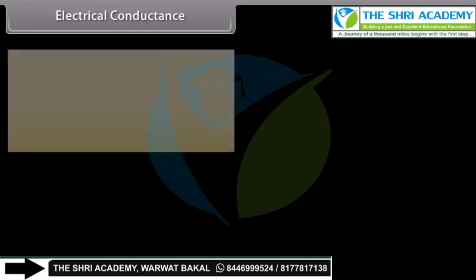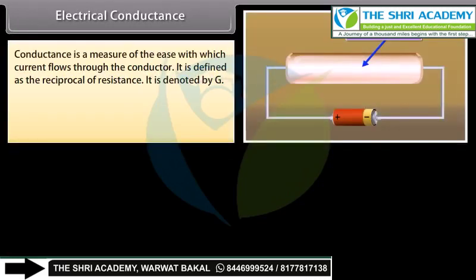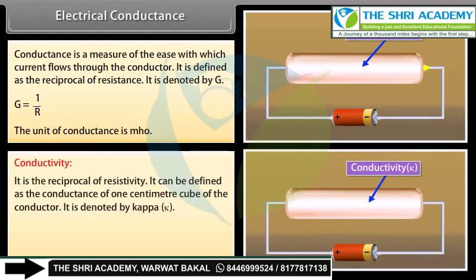Electrical Conductance: Conductance is a measure of the ease with which current flows through a conductor, defined as the reciprocal of resistance: G = 1/R. Conductivity is the reciprocal of resistivity, defined as the conductance of 1 cm³ of the conductor: κ = L/(R×A). The unit of conductivity is mho cm⁻¹.